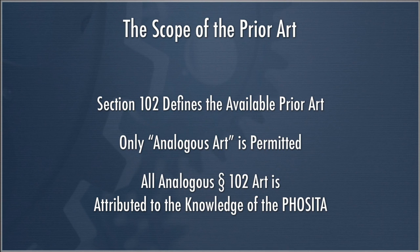As you can obviously tell, a person having ordinary skill in the art is really not ordinary in that sense — there aren't probably many people who know every single bit of prior art in their entire field at any given moment. But that's how it works. The scope and content of the prior art is everything that is analogous and fits Section 102 — a pretty broad sweep for Section 103 in terms of scope and content of the prior art.